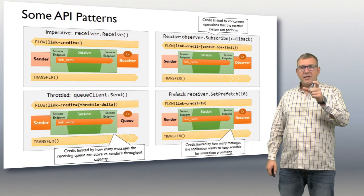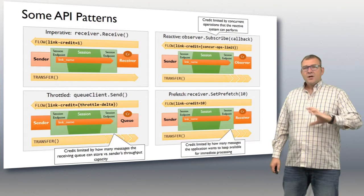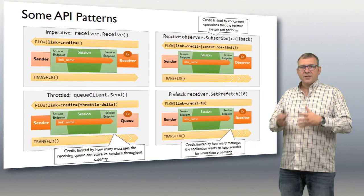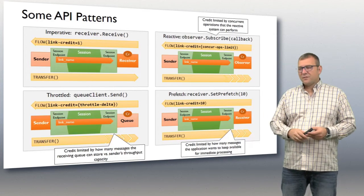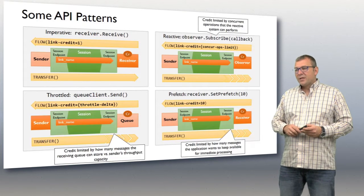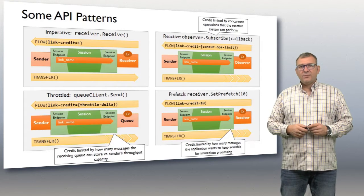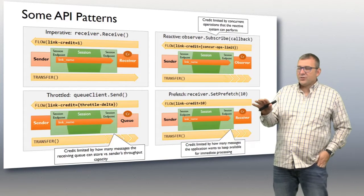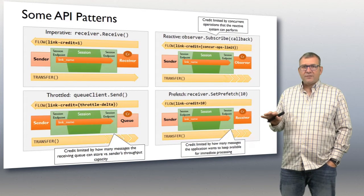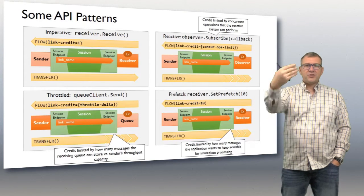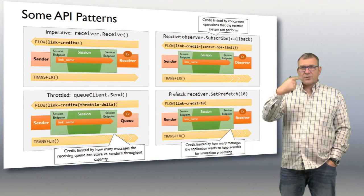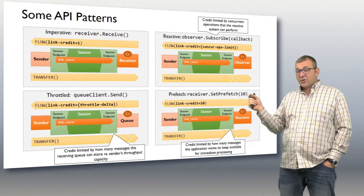The queue receiver (lower left) simply parks ample credit on the sender side — a delta of how many messages it wants to accept at once, say a hundred or a thousand, which is a tunable and dynamically adjustable value. The queue can also push back and stop flow by booking a link credit of zero. You can also set a prefetch limit: instead of booking one link credit per receive call, you book, say, 10 link credits upfront, filling a local buffer so subsequent receive operations are satisfied locally rather than going across the wire each time.